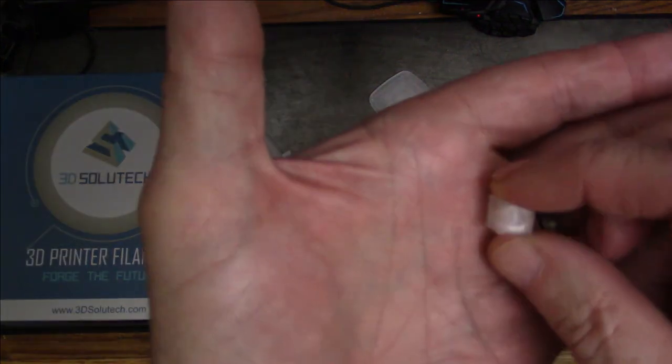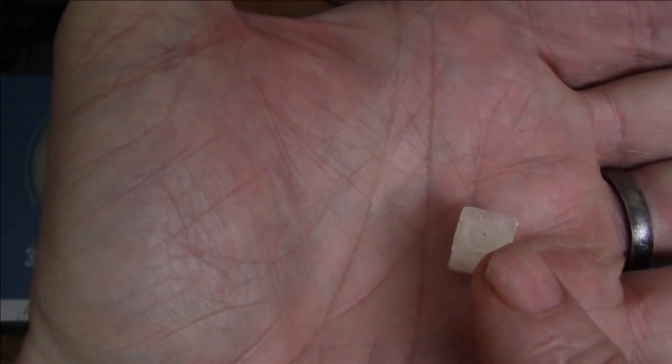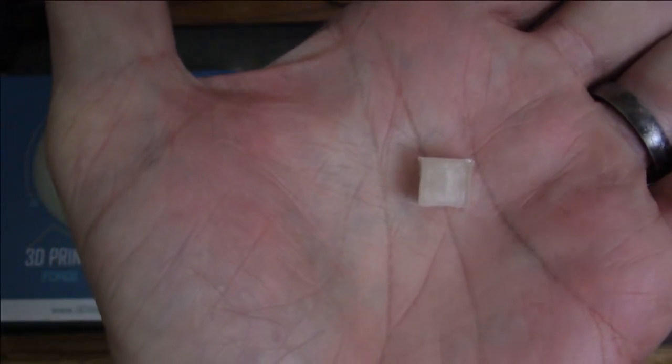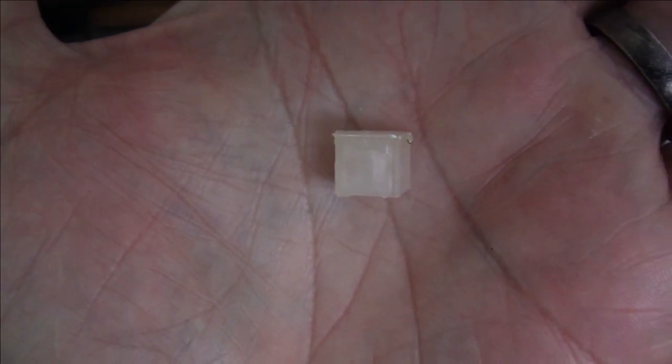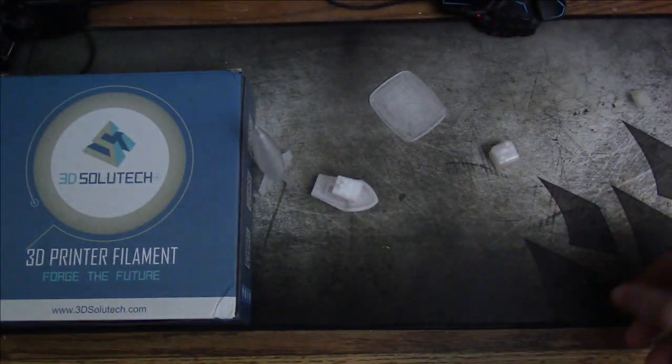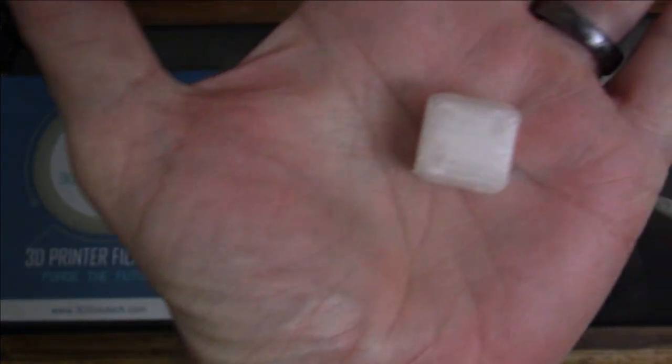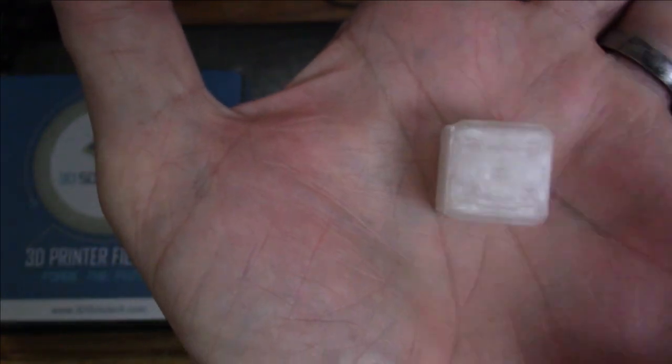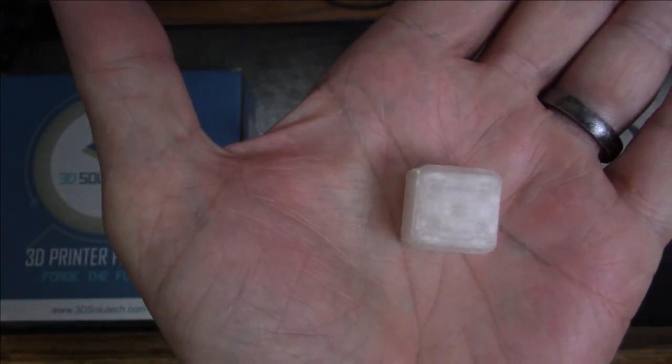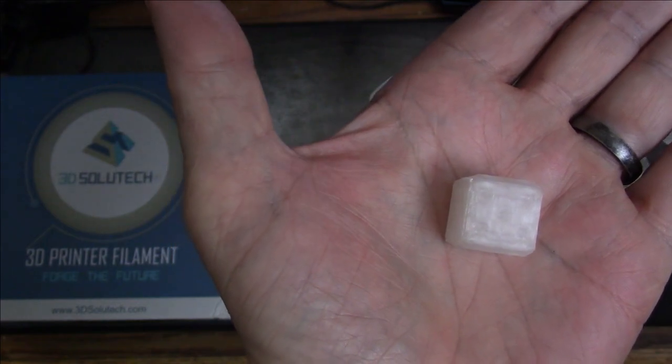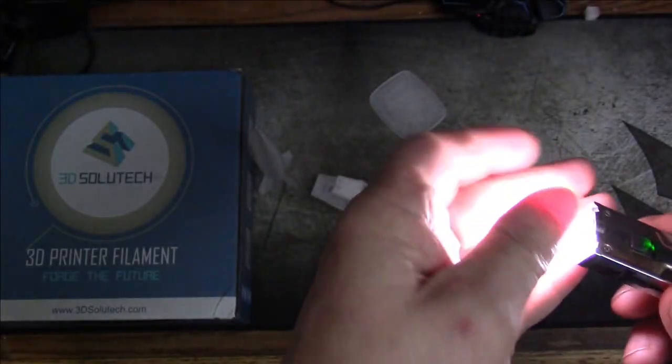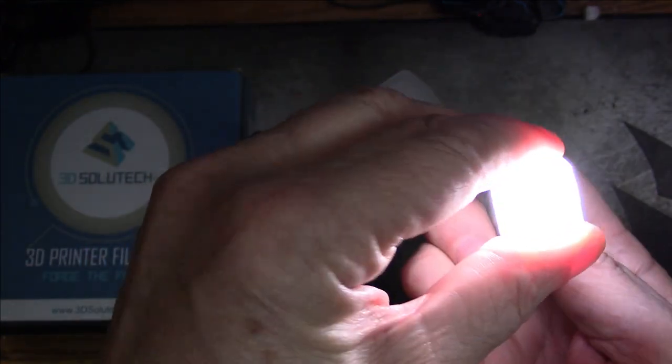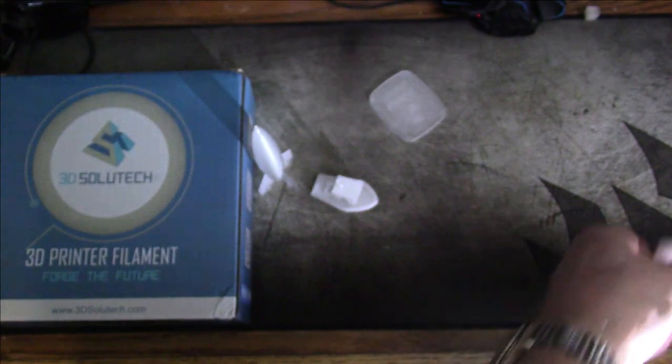So the first thing I printed is this itsy-bitsy little tiny cube. Don't ask me why I printed such a little tiny cube. I didn't know it was so tiny when I did it. There's supposed to be a hollow in the center, but it's so tiny I can't tell whether it's there or not. Next thing I printed was this dice. There's supposed to be a skull in here, but again, let me get my flashlight. If there's a skull in there, I can only get tiny little glimpses of it.